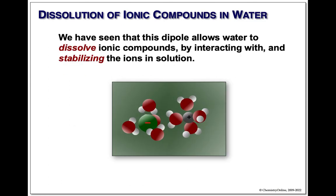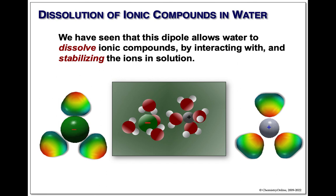Water is capable of stabilizing charges because of its dipole. If we had a negative ion in solution, the water tended to orient itself around the charge with the positive ends pointing in towards it. If we had a positive charge, it was just the opposite — the negative ends of the water all pointed in. This allowed the waters to disperse and stabilize the charge, which is what makes it possible to dissolve an ionic compound.